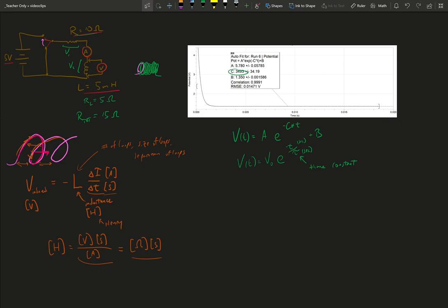So how can I figure out how R and L, the values of resistance and inductance, can give us this decay time constant? I'm going to look at the units, the dimensions.